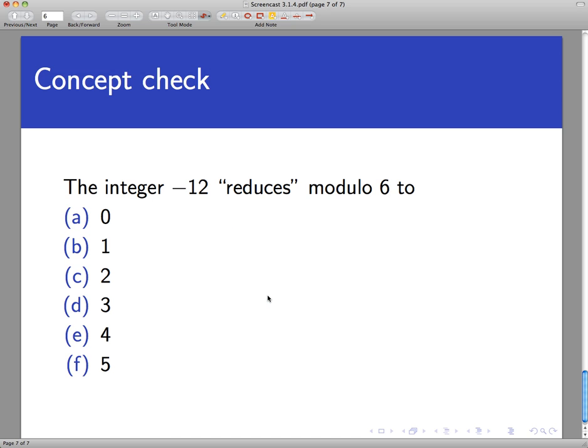Now another concept check with the same question. What about the integer negative 12? What does that reduce to mod 6? This time I've screened out any obviously wrong choices here. These are all in the realm of possibility 0 through 5.